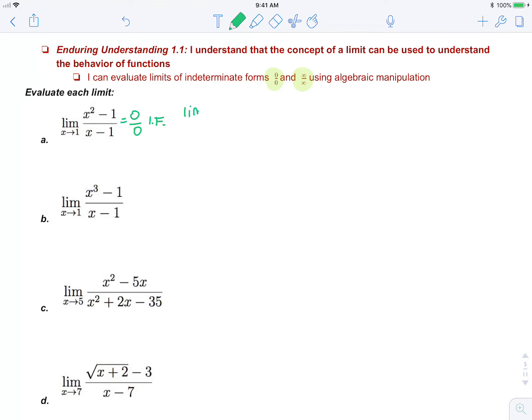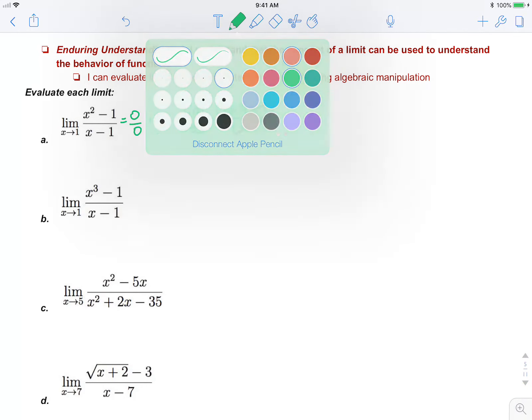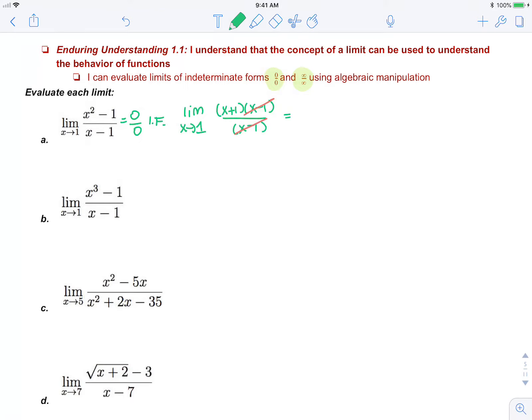So this becomes the limit as x approaches 1, and I can factor my numerator using difference of squares, and this eliminates. So now I can do direct substitution, 1 plus 1 is 2.